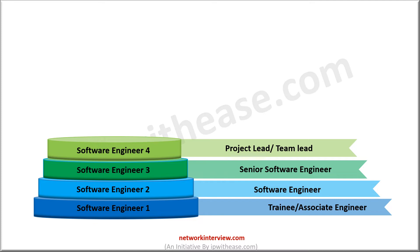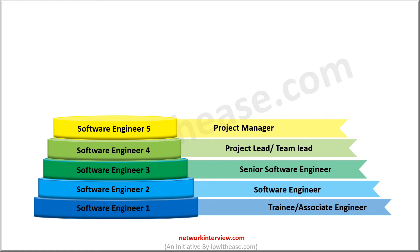After obtaining a minimum of 8 to 10 years of experience, you will be promoted as Software Engineer 5. The Software Engineer 5 equals to project manager. He or she decides the project and gives tasks to the different project leads. The average annual salary of Software Engineer 5 is $290,000 to $320,000.